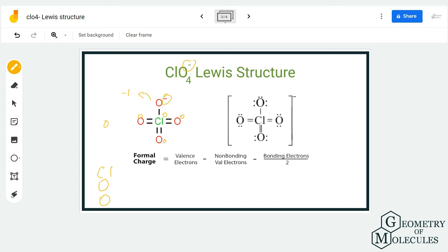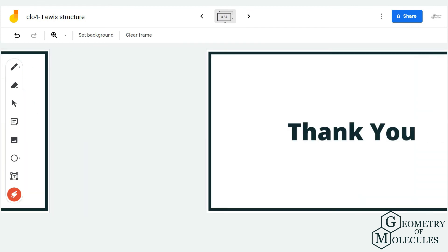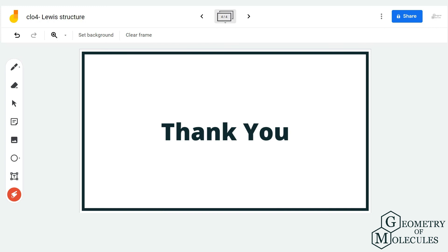And because it is an ion, you should put brackets around it and also mention its charge, because this is how we write the Lewis structures for ions. So this is the Lewis structure for ClO4 minus. I hope this video helps you understand that easily. For more such videos on Lewis structure, molecular geometry, and polarity of molecules, make sure to subscribe to our channel. Thank you for watching.